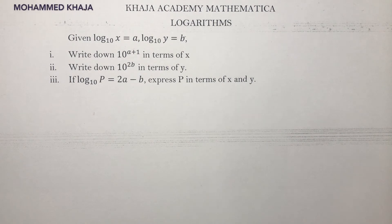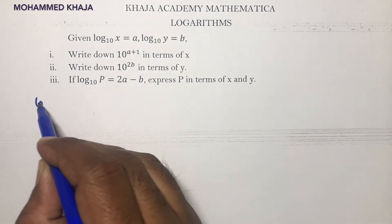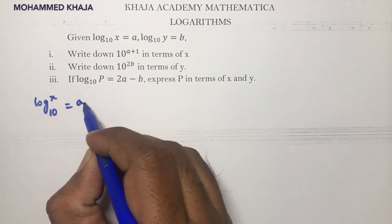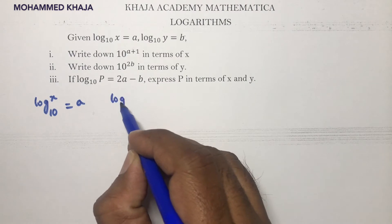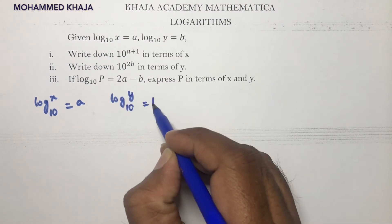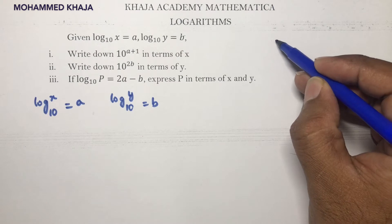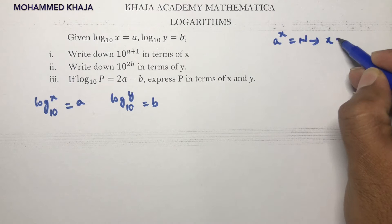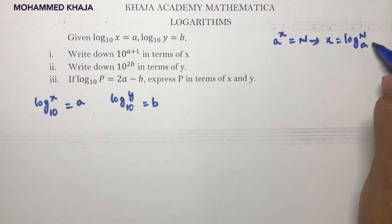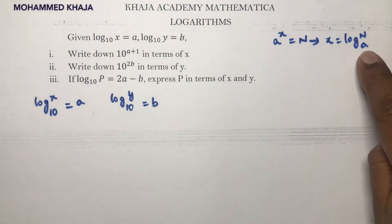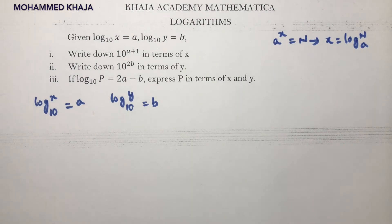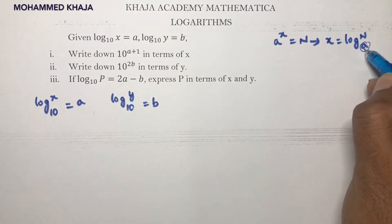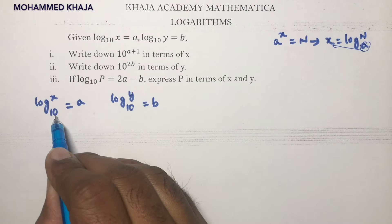Given log x to the base 10 equals a, and log y to the base 10 equals b. Using the logarithmic formula — if a^x = n then x = log n to the base a — we convert to exponential form: 10^a = x and 10^b = y.